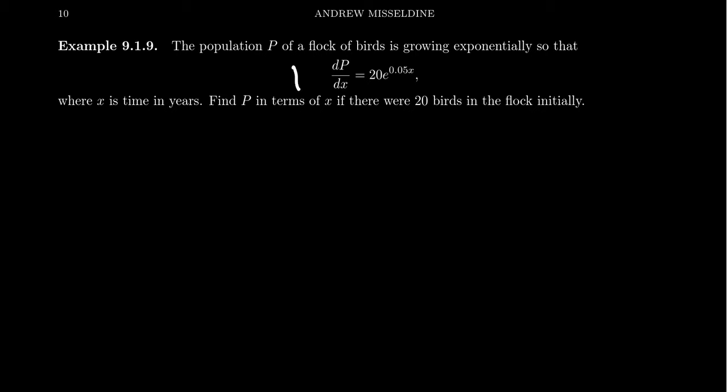So we're saying that the derivative P' equals an exponential function. Before anyone panics, we're not saying that the population of birds is growing exponentially. We're saying the rate at which the population is growing is exponential. The derivative is growing exponentially.